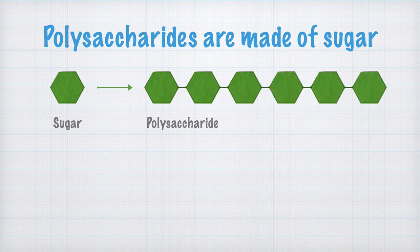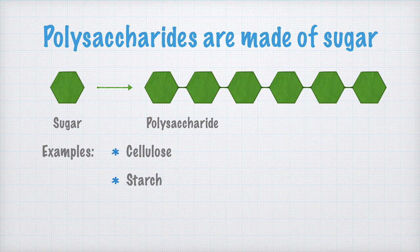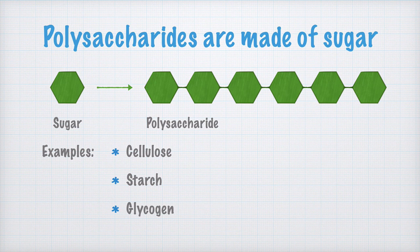Three important types of polysaccharides are cellulose, which make up the plant cell walls, starch, which serves as energy storage in plants, and glycogen, which serves as energy storage in many animals, including humans.